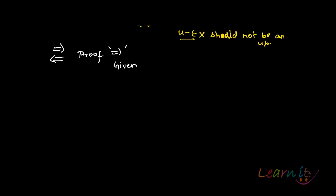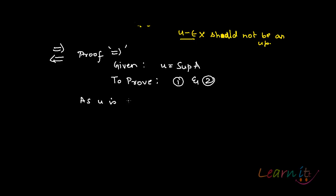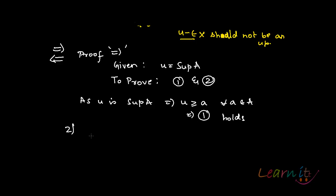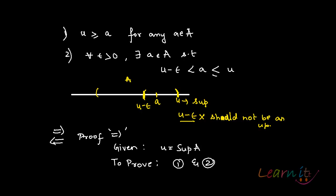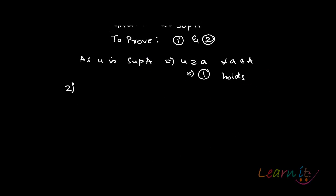Given to us is that U is sup A, and we need to prove conditions 1 and 2. Now, as U is sup A, that means U is greater than or equal to a for all a belonging to A. So this means that condition 1 holds. Now we need to prove the second part, which says that for all epsilon greater than 0, there should exist an a belonging to the set such that this holds.